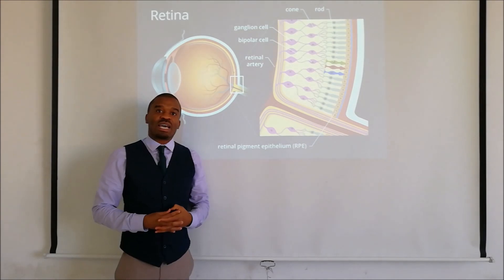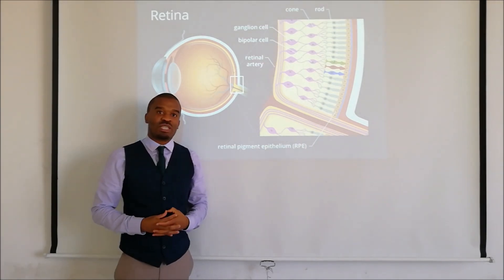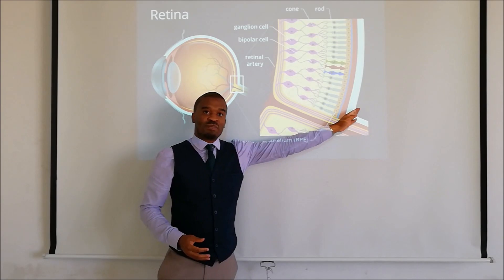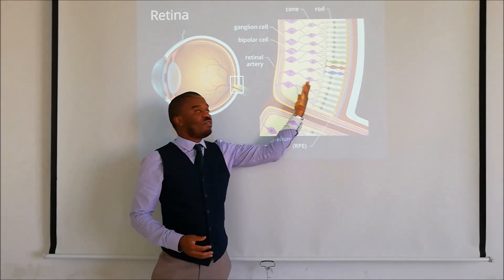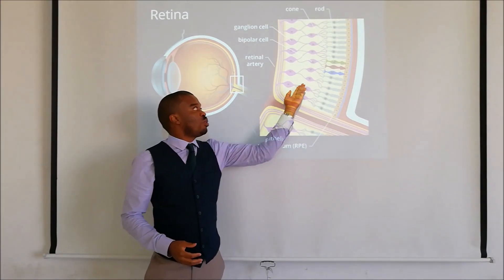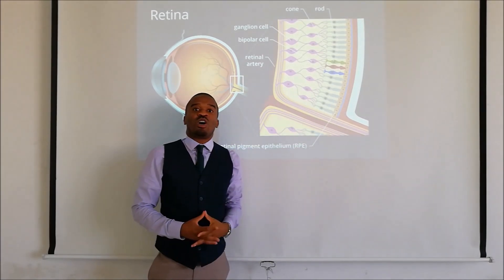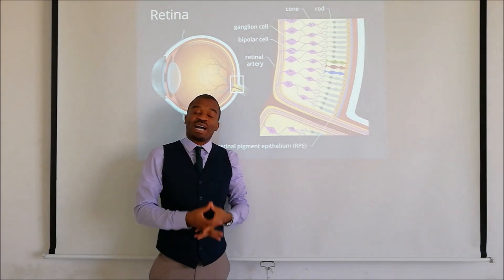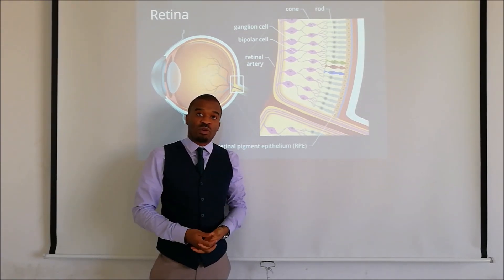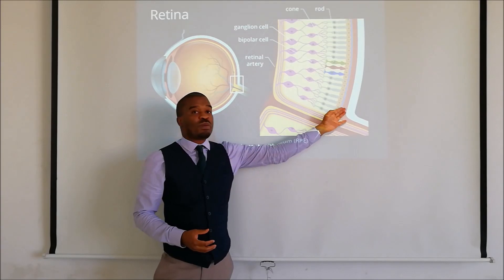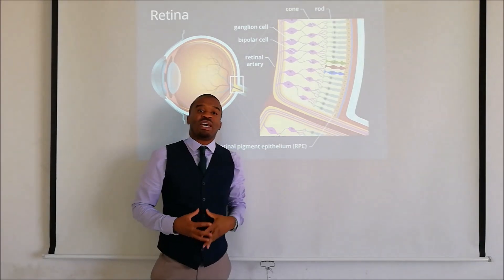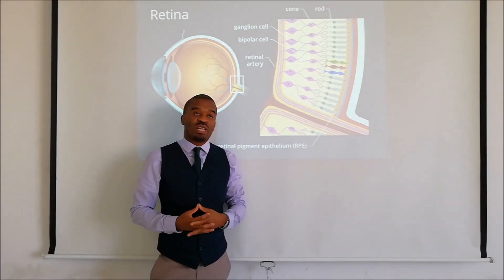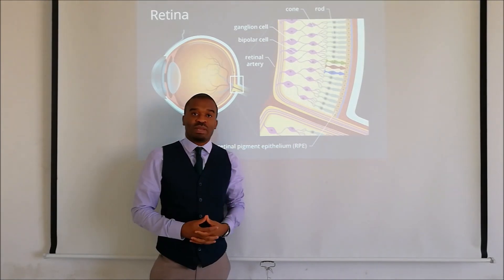The human retina can be divided into two segments or two parts. We have the pigment part and we have the neural part. The neural part contains cells that conduct and generate visual impulses, whereas the pigment segment helps to maintain the health and the functioning of the neural segment.